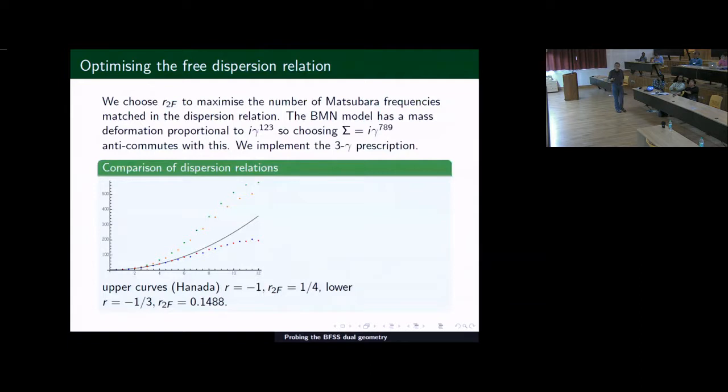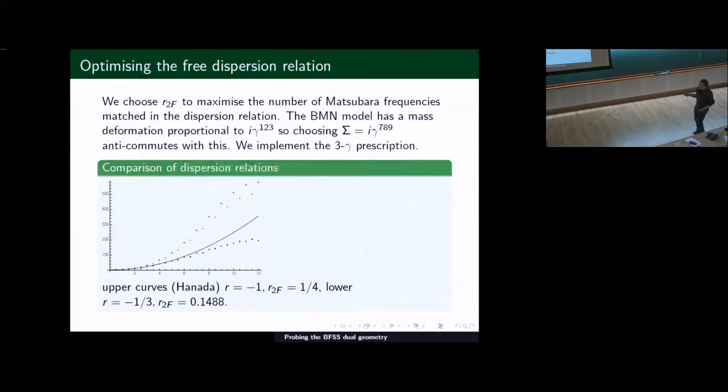Second thing that we do is we choose the parameters. We choose R1 and R to be minus one over three. And we choose R2 so that we match the maximum number of bar frequencies. We're interested in the low energy sector. So we choose our parameters so that we get maximum coverage of mass bar frequencies. And we can typically get around a quarter of them to be almost perfectly fit. I've shown the graph here is for when the mass is included. The mass term has an additional gamma one, two, three, and it causes the difference between these two.